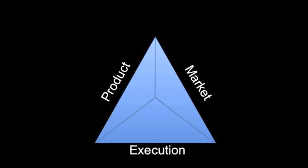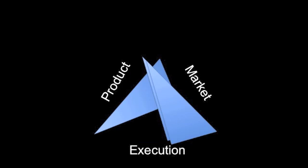So successful strategy comes from the alignment among the product, market, and execution life cycles. If all three are aligned, you have a high probability of success. If one or more are misaligned, if you try to shortcut the life cycle, you have a high chance of failure.